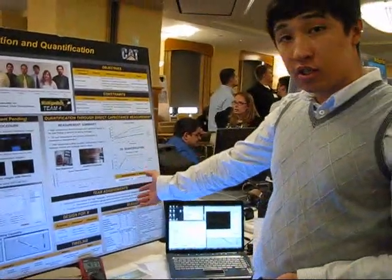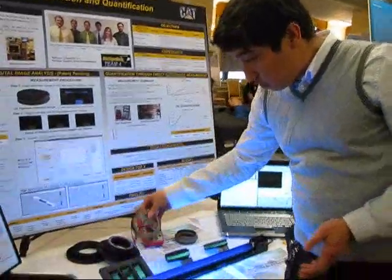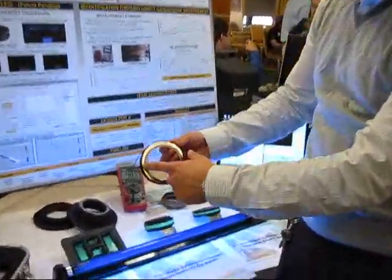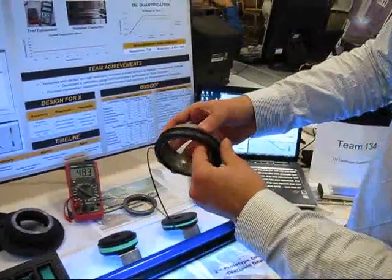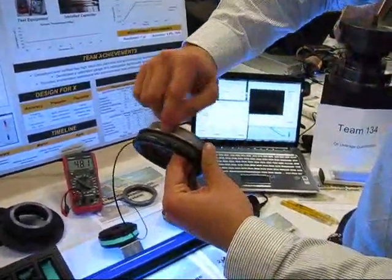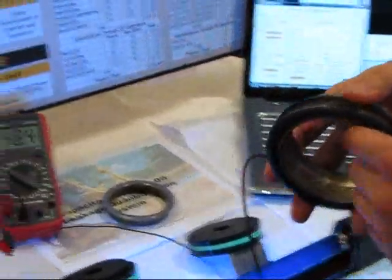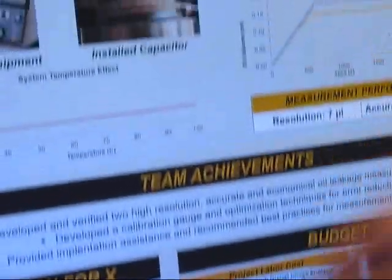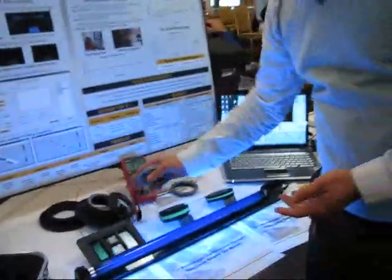The other system is the capacitance measurement. We have a capacitor on a seal flange, just like this. As oil leaks out and sticks to the capacitor, the capacitance measurement measures the capacitance change, and from that we can determine how much oil is present on the capacitor. Those are the two different systems together.